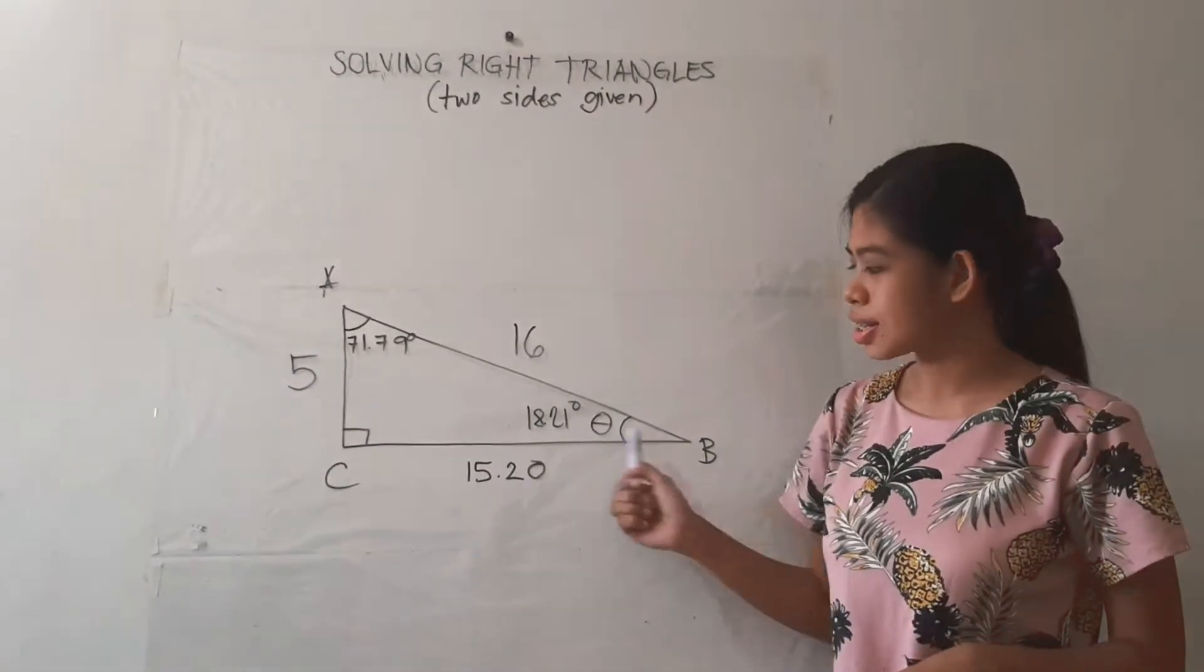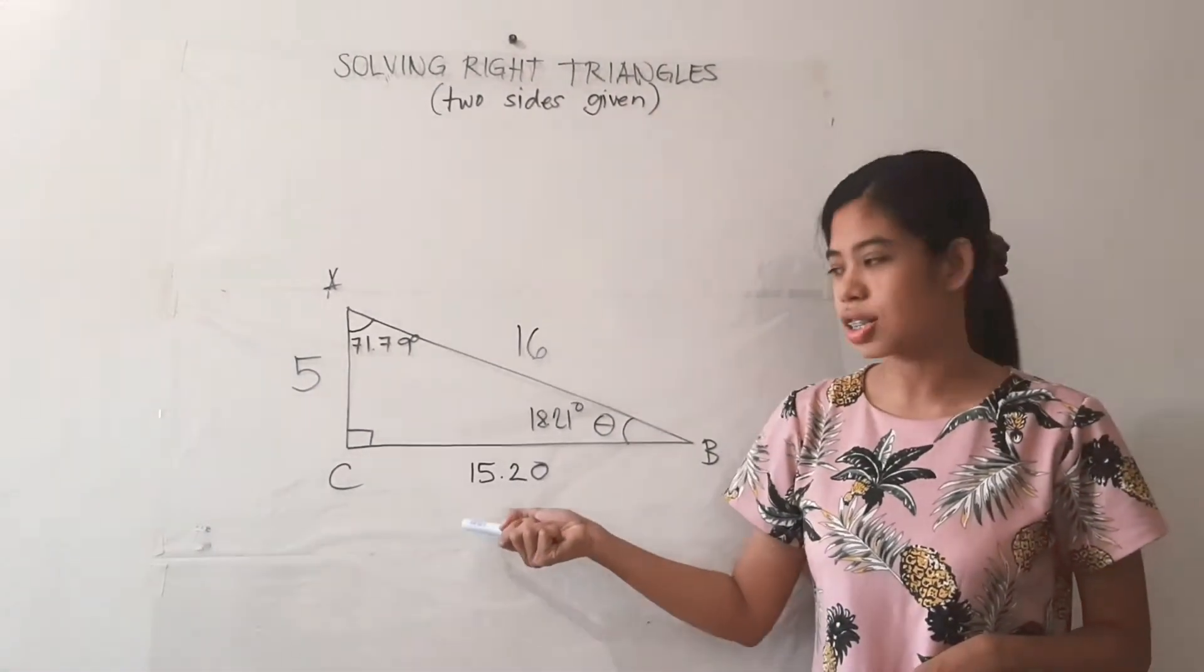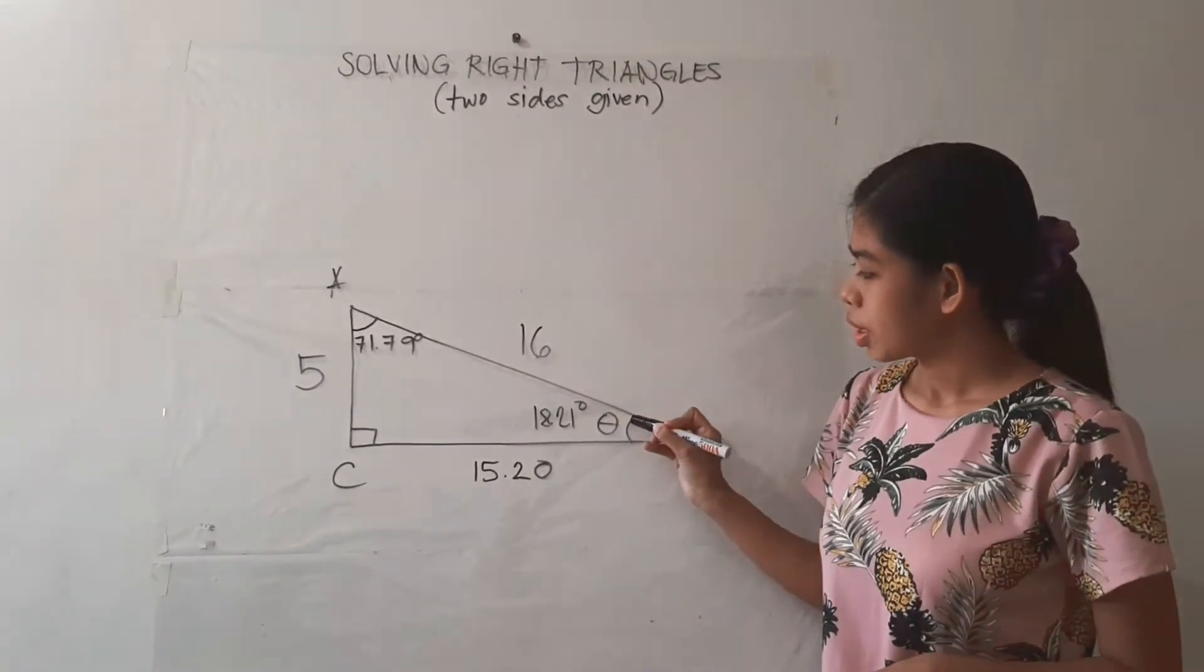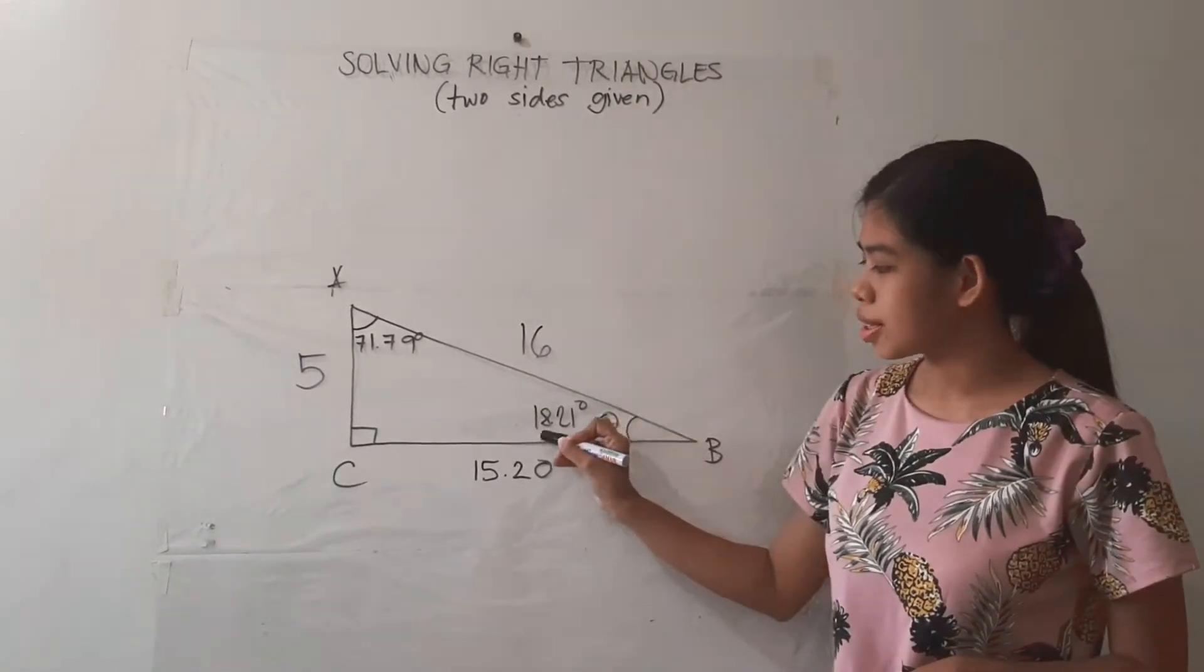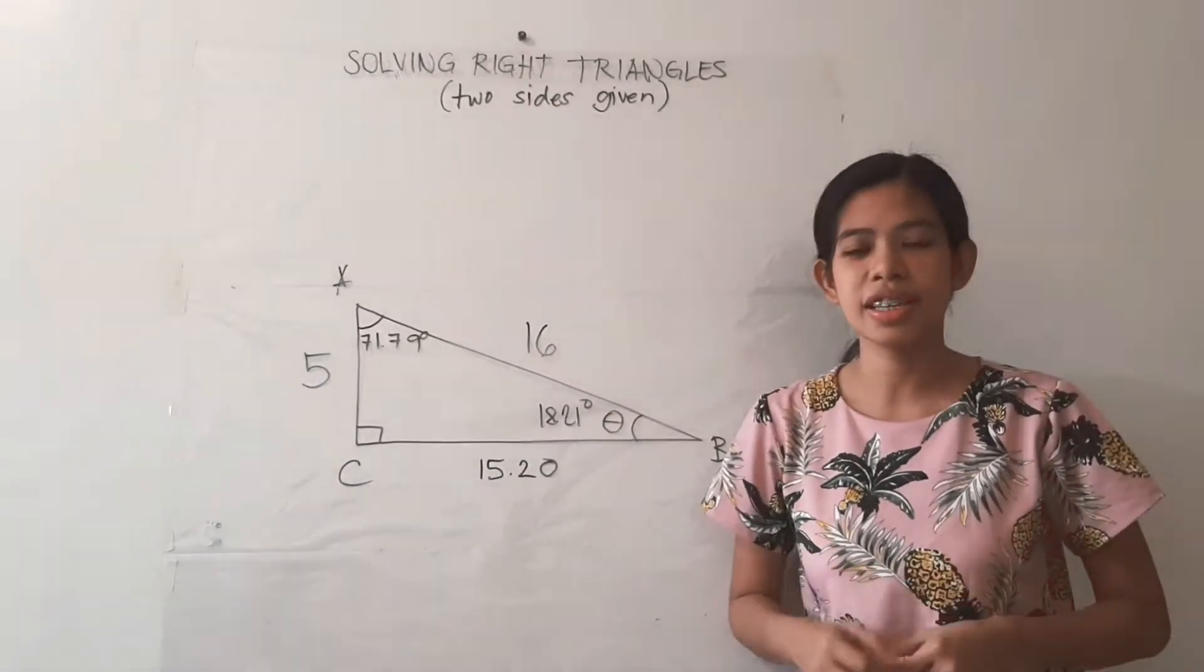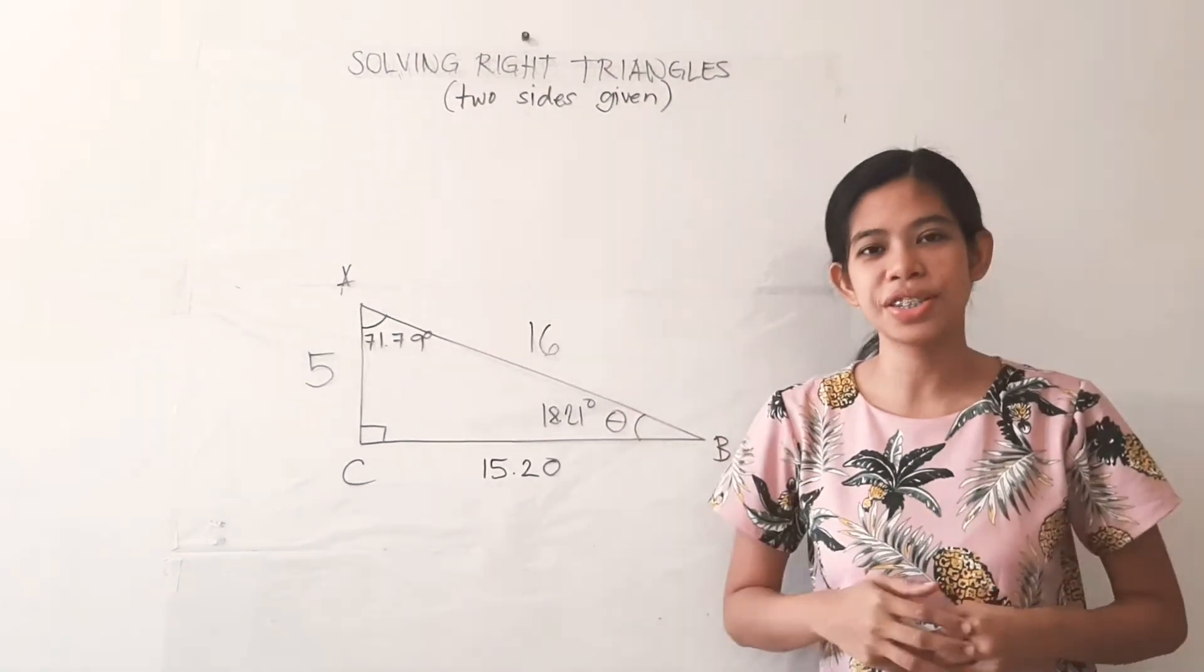So for the measure of this side, which is the adjacent side, that's 15.20 units. And for the measure of angle B, that's 18.21 degrees. And the measure of angle A is 71.79 degrees. Thank you so much for everyone who answered the activity.